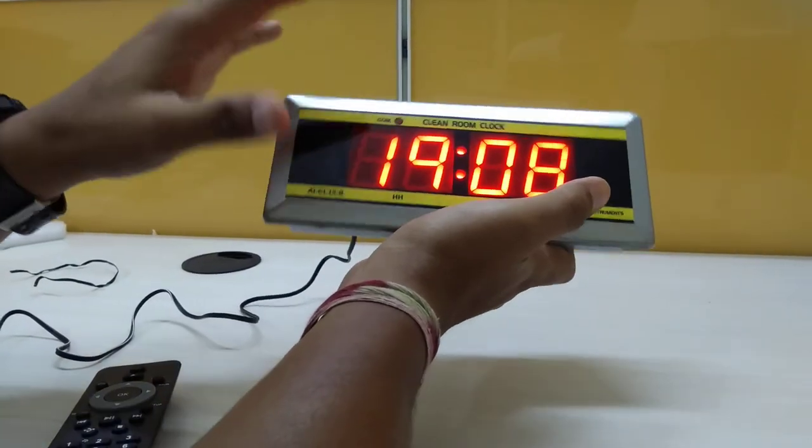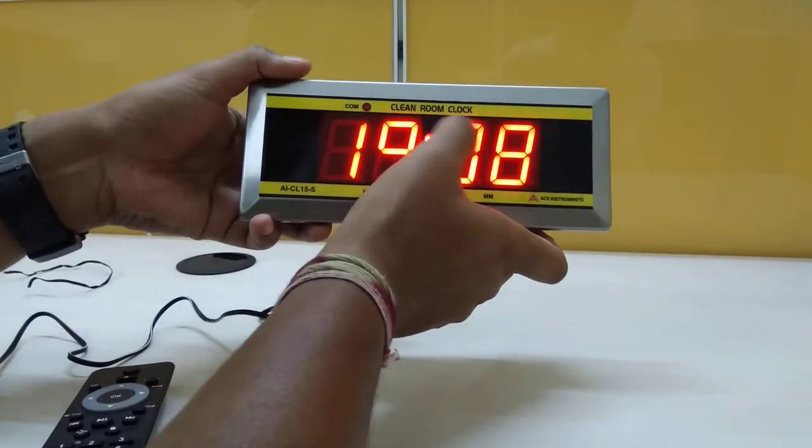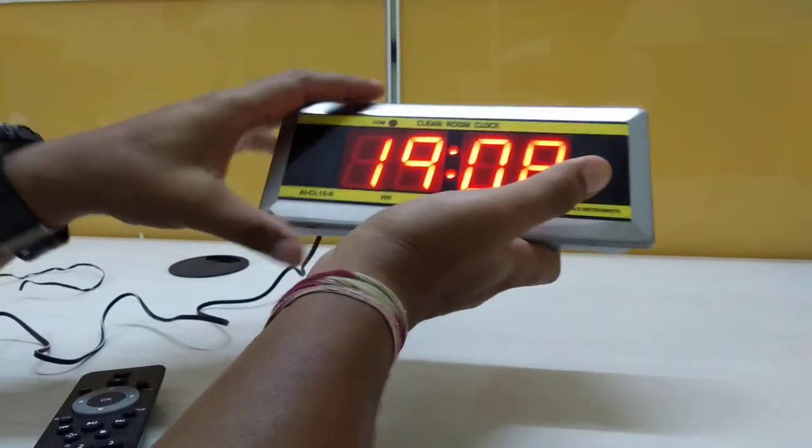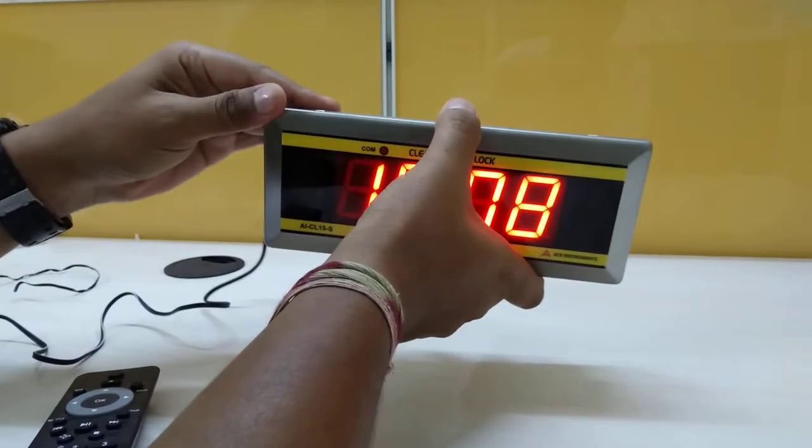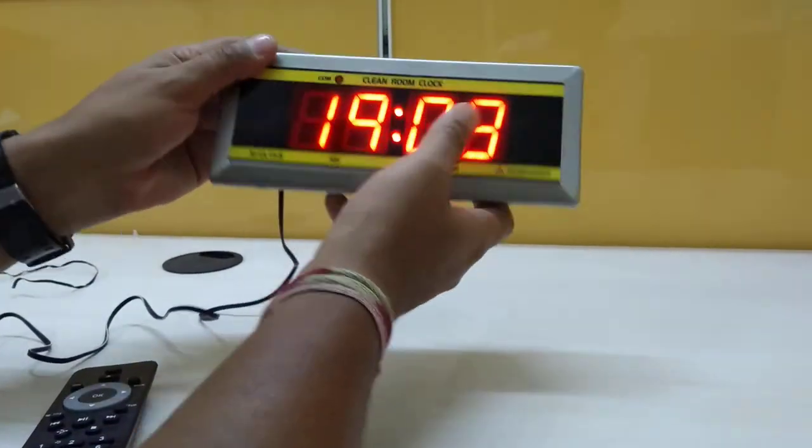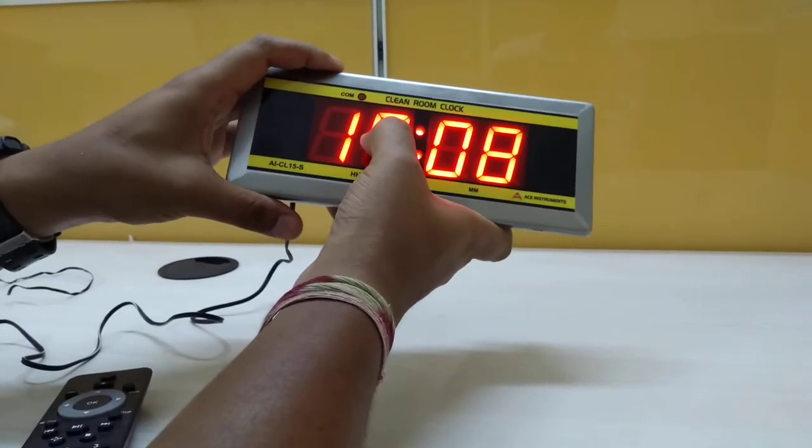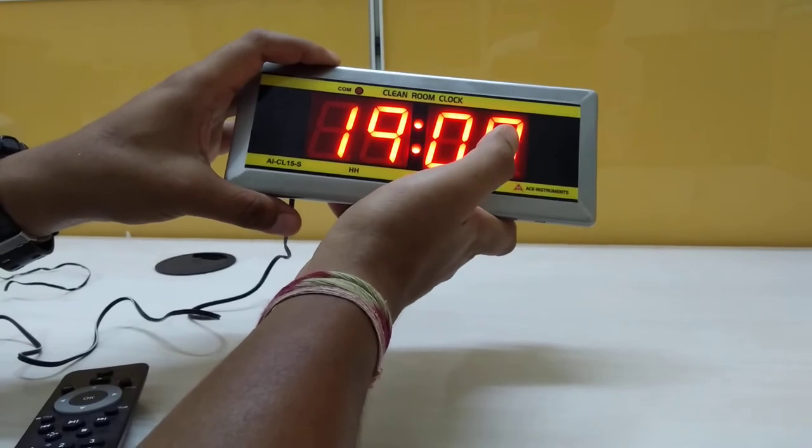That's the reason we have mentioned it as a clean room clock. If you see the body, this is basically an aluminum back and SS front plate. It has got a display of hours and minutes.